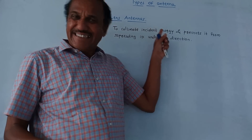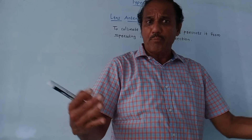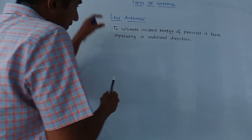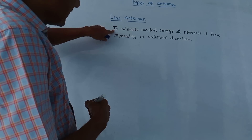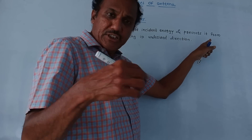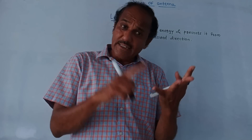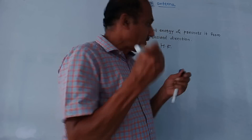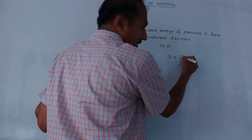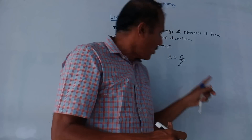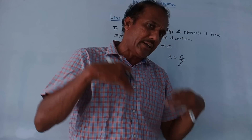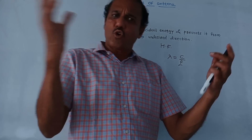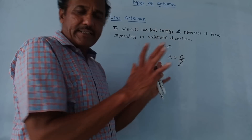The last type is the lens antenna, which is similar to lenses used in optics. A lens collimates light rays and allows them to travel in a particular direction. On the same principle, lens antennas are used to collimate incident energy and prevent it from spreading in undesired directions. These antennas are especially used at high frequencies. At lower frequencies, wavelength increases (lambda = C/F), making the antenna dimensions too large, so lens antennas are not suitable for lower frequencies. Concave and convex lens principles are applied to these antennas.